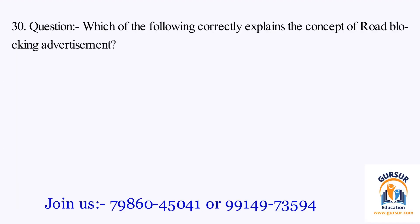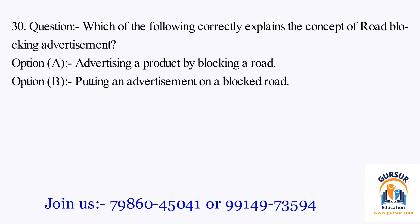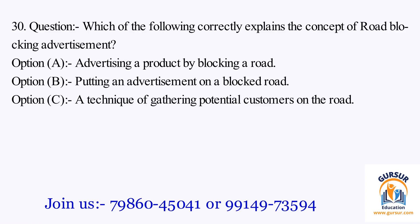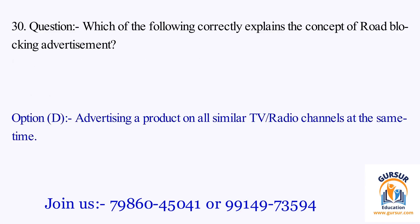Question number 30. Which of the following correctly explains the concept of road-blocking advertisement? Option A: advertising a product by blocking a road. Option B: putting an advertisement on a blocked road. Option C: a technique of gathering potential customers on the road. Option D: advertising a product on all similar TV and radio channels at the same time. The right answer is Option D, that is advertising a product on all similar TV and radio channels at the same time.